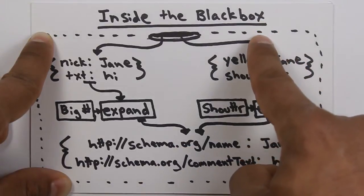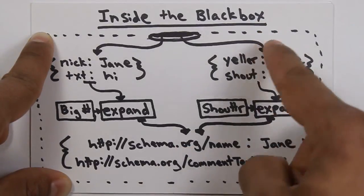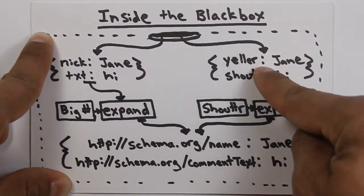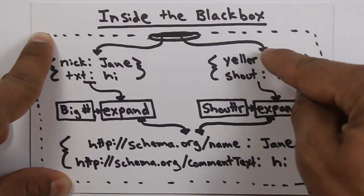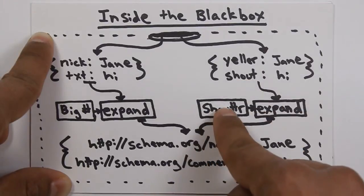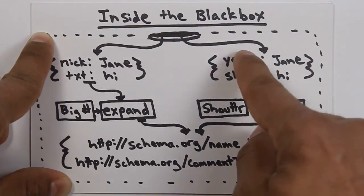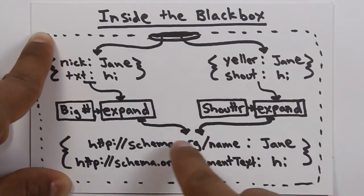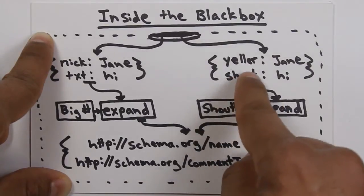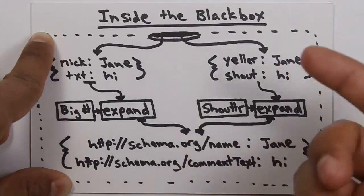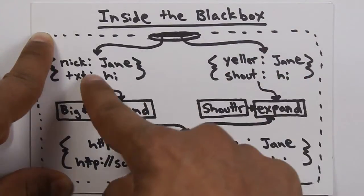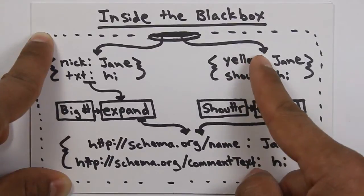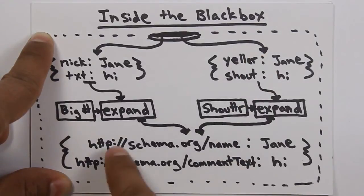Now, we apply the same kind of thing to the input data from this site. So, we apply the Shouter JSON-LD context to the expansion algorithm. This gets turned into name. And this gets turned into common text. So, in this process, using the expansion algorithm, we've taken data from two different websites, two different disparate data sources, and we've normalized it.